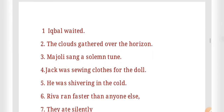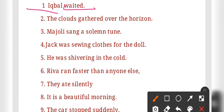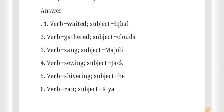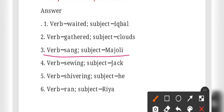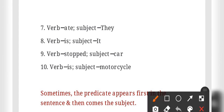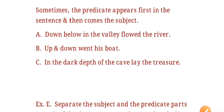In sentence one: subject is 'Iqbal,' verb is 'waited.' Sentence two: verb is 'gathered,' subject is 'a cloud.' Sentence three: verb is 'sang,' subject is 'Majory.' Sentence four: verb is 'saved,' subject is 'Jack.' Sentence five: verb is 'shivered,' subject is 'he.' Sentence six: verb is 'ran,' subject is 'Ria.' Sentences seven through ten follow the same pattern with their respective verbs and subjects.